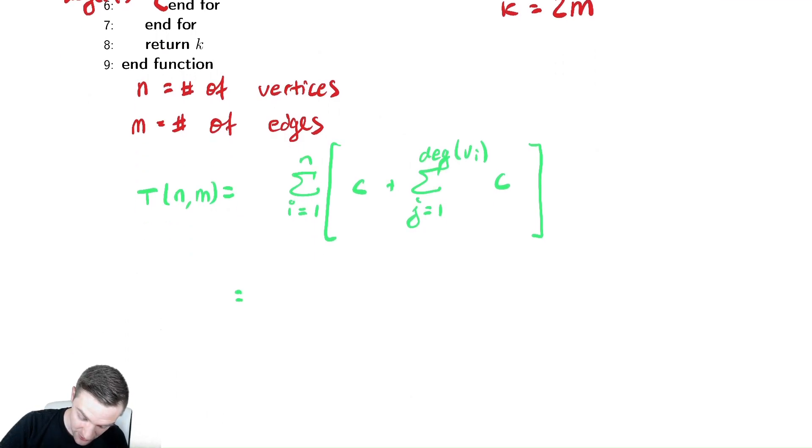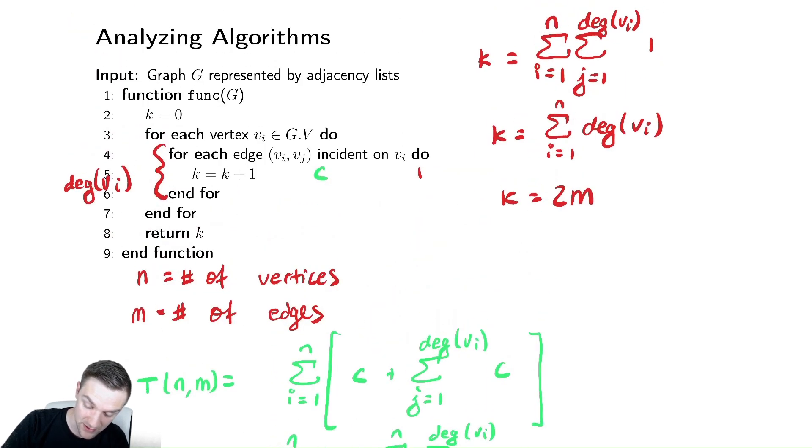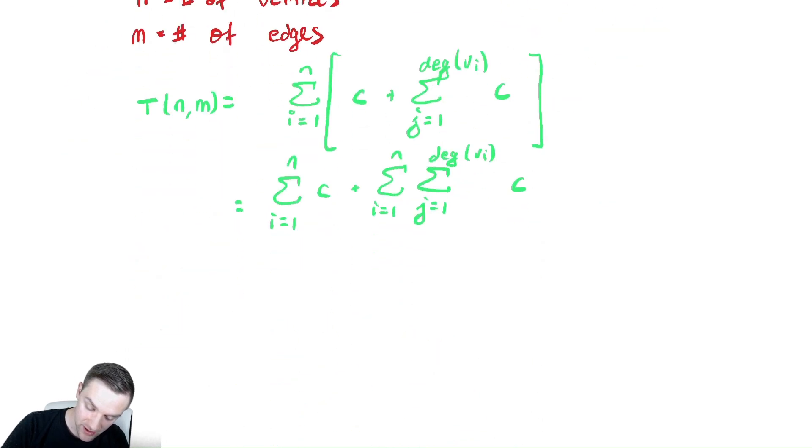Now, having done this, I can distribute the summation and I have the sum from i equals 1 to n of c, plus the sum from j equals 1 to the degree of vi of c. And I forgot a summation, so let's fix that really quick. I should have plus the sum from i equals 1 to n. And I know what this is going to converge to because it's the exact same as what I had up here, except I have a c inside instead of a 1. So the first summation is nice and easy, that's just c times n, plus the second summation is 2cm.